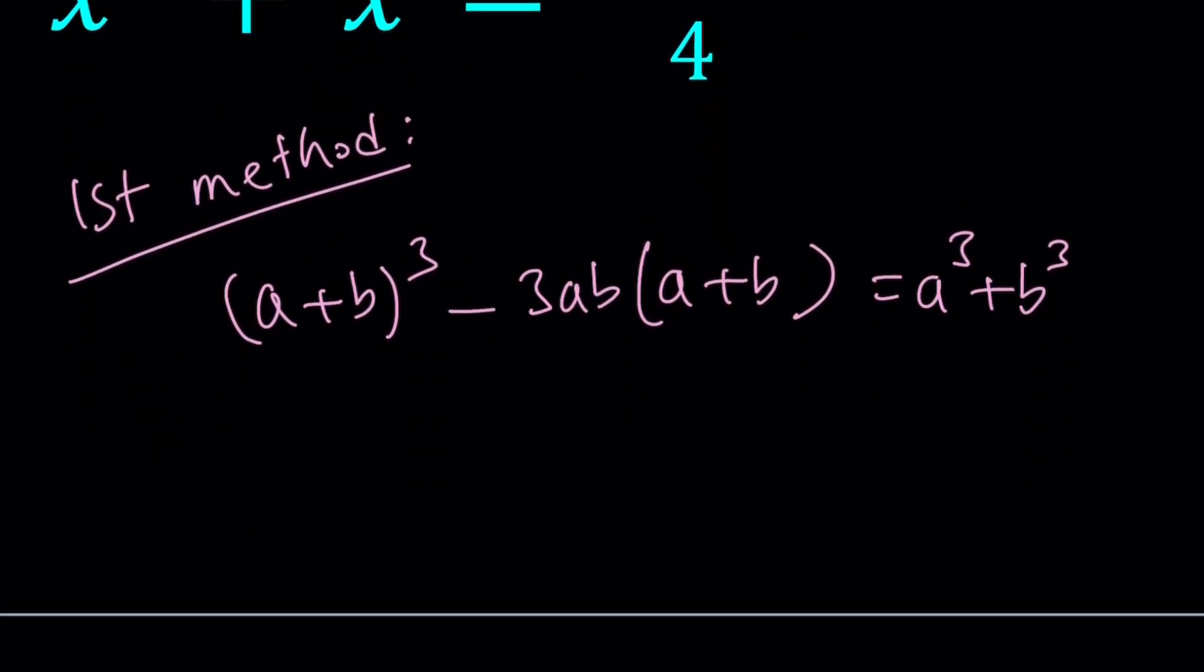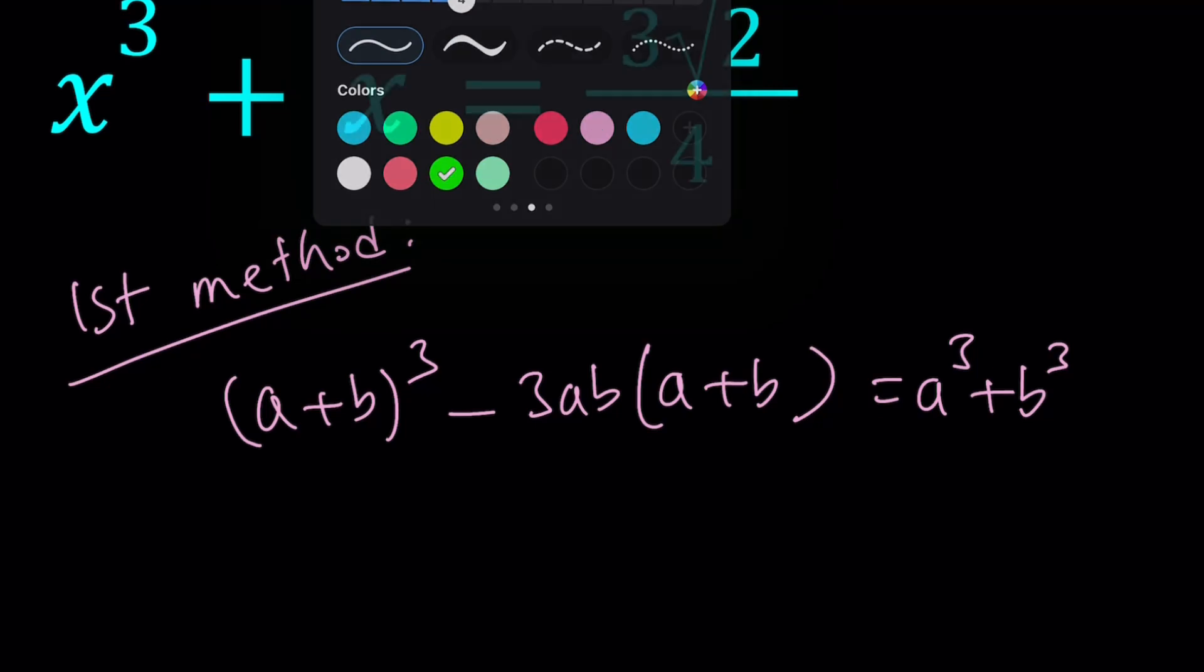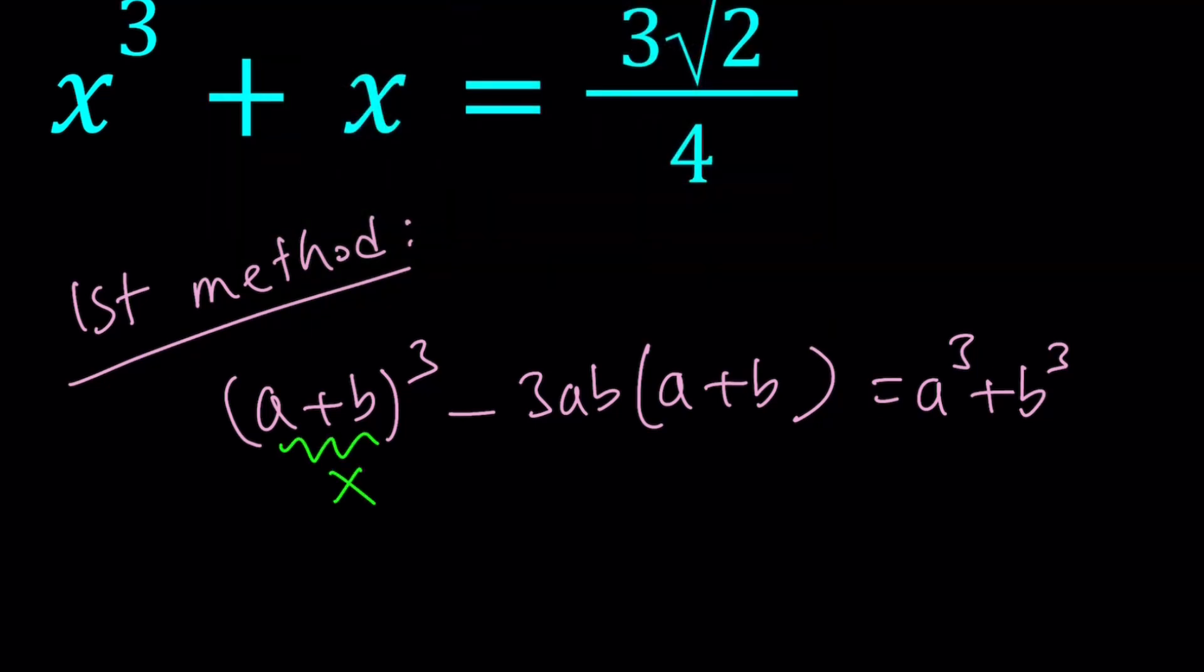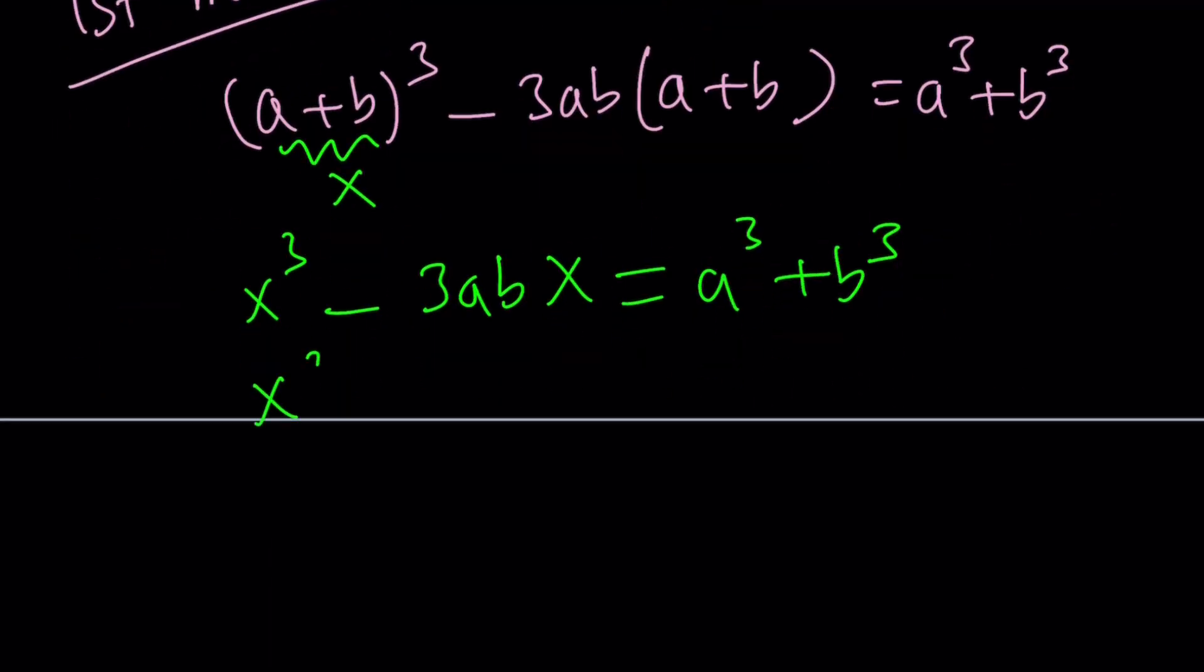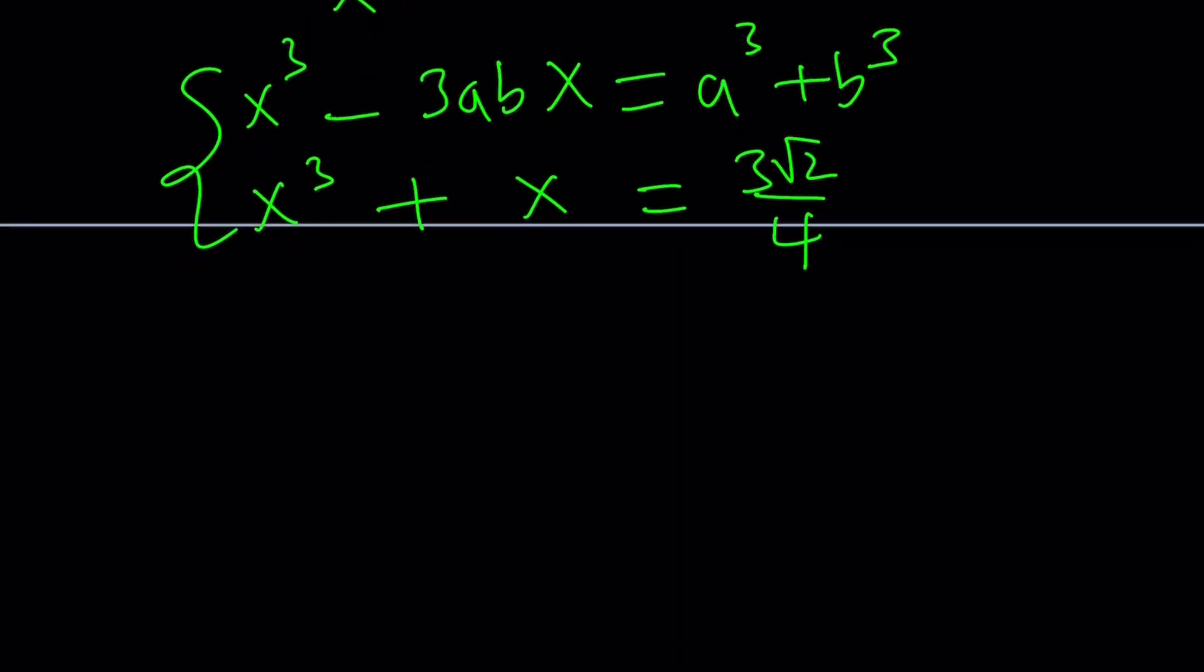Great. So how does it help? Well, here's the secret sauce. If you set a + b equal to x, you get x³ + 3abx = a³ + b³. And if you compare this equation to the given equation, you're going to see some similarities. Let me copy that equation here. x³ + x = 3√2/4. Hopefully you can see what I see. Take a look at these two equations and compare them term by term.